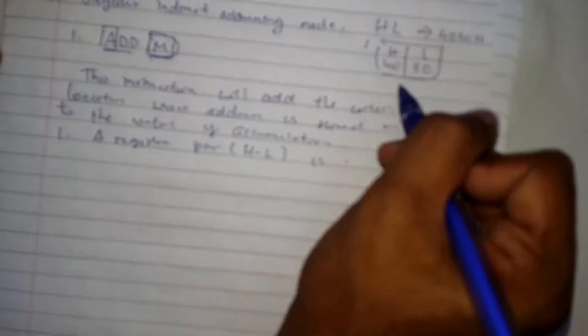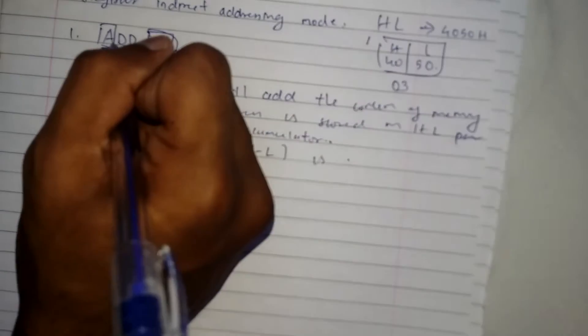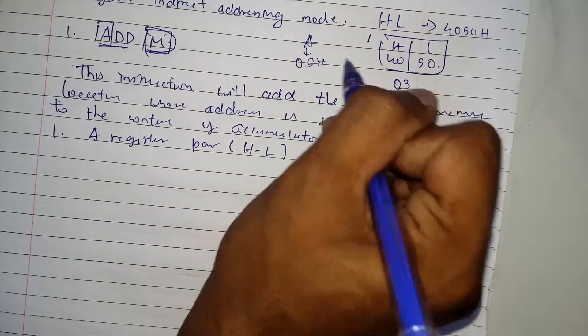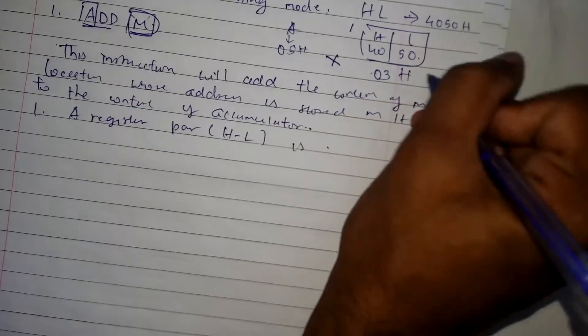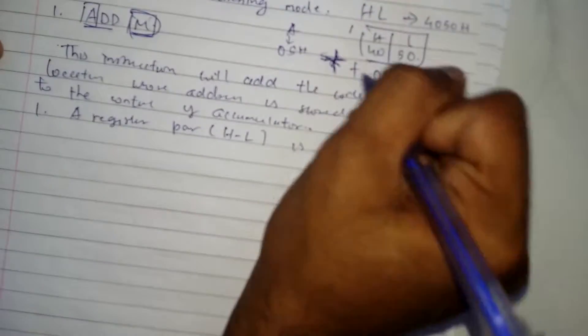And the content in 4050, if we have 03, this will be added to the content. If we have 05 in the accumulator and 03 in here, so these two will be added.